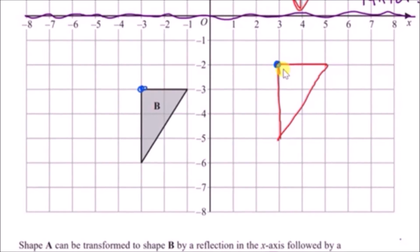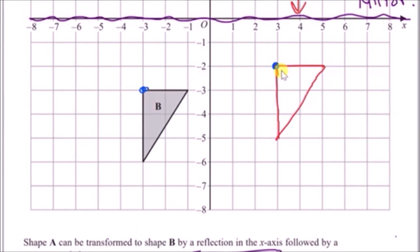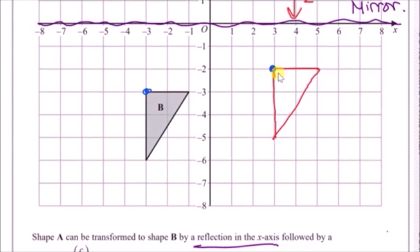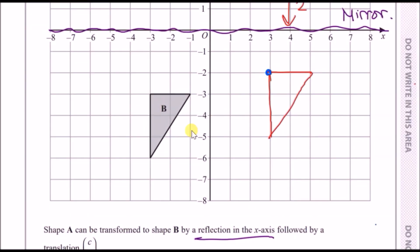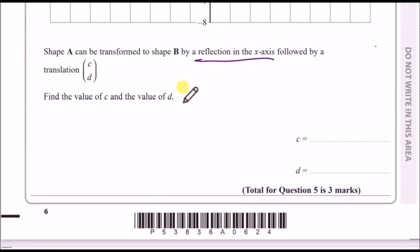To find the translation vector, pick the top-left corners of both shapes and count the blocks. The shape has moved exactly 6 to the left and 1 down. Since we're moving against the x-axis direction, c = −6 and d = −1.